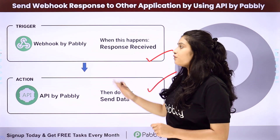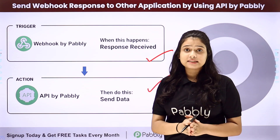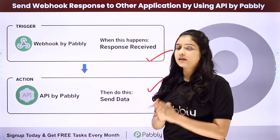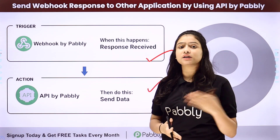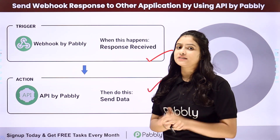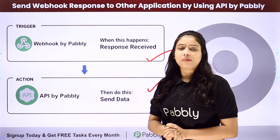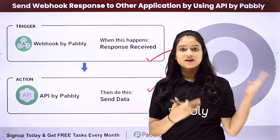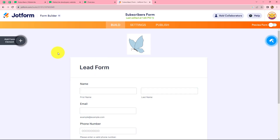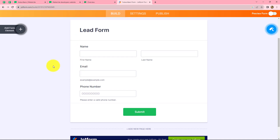We will be connecting both of them using Pabbly Connect in such a way that whenever a new response is captured through webhook, automatically that same response will be sent to another application by using API by Pabbly. To learn the entire process step by step, let me take you to my screen and let's start learning step by step.